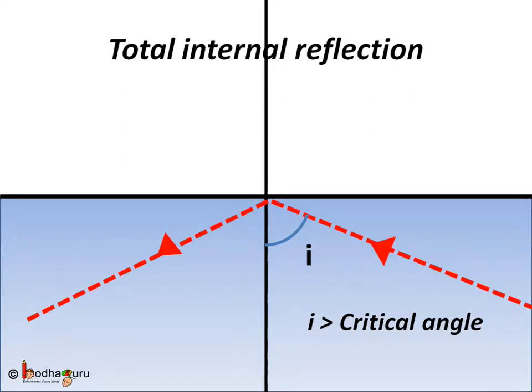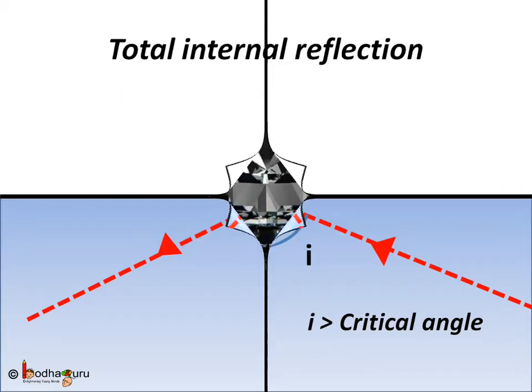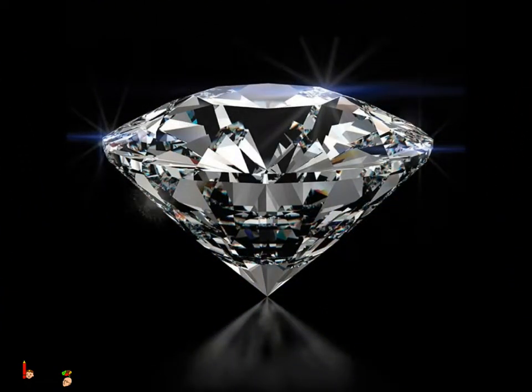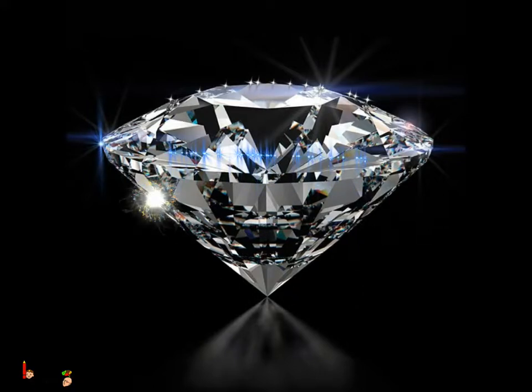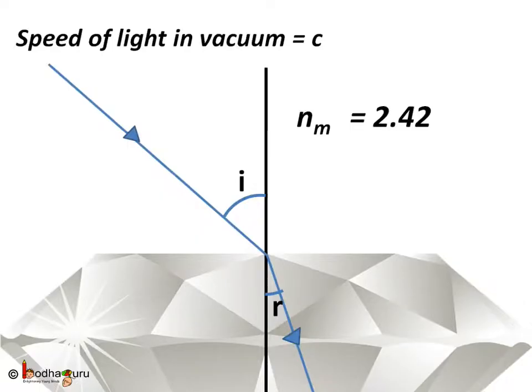This angle is different for different media. Let us take some examples of the use of critical angle. Have you wondered why diamonds are so shiny? As we know, diamond is a very dense material, hence its refractive index is very high at 2.42. The light enters the diamond from air, but when it tries to exit from diamond into the air...